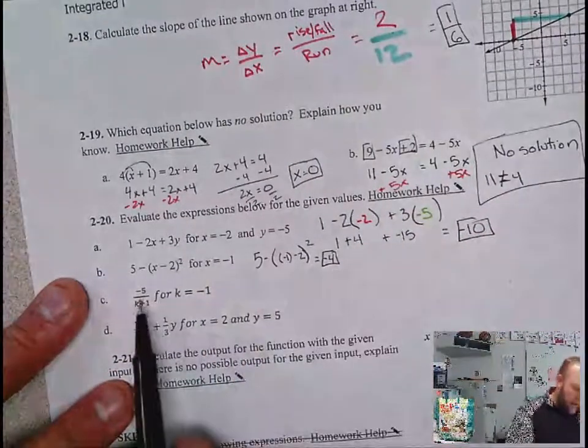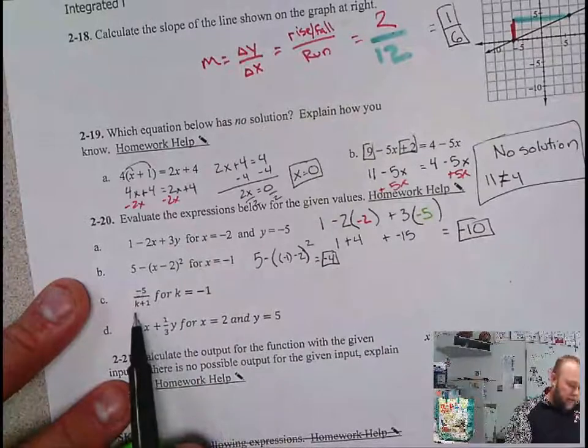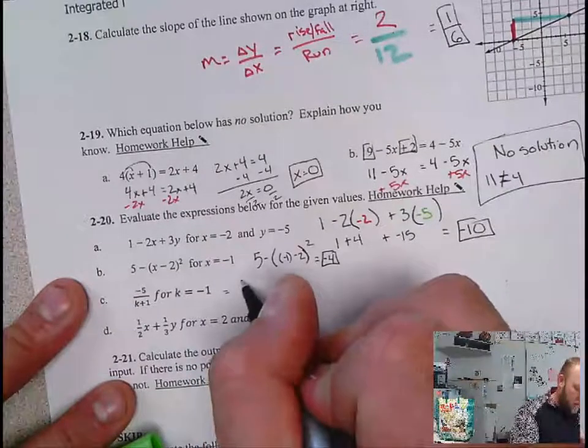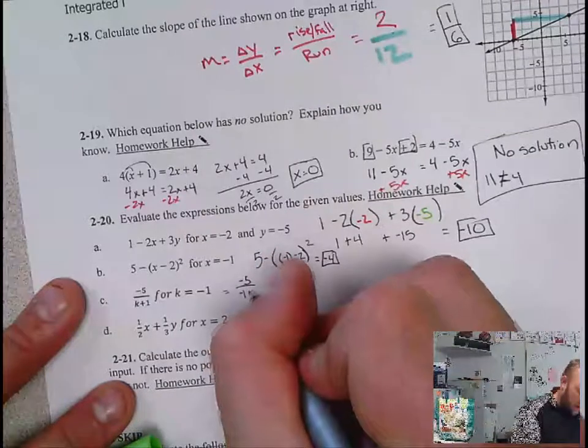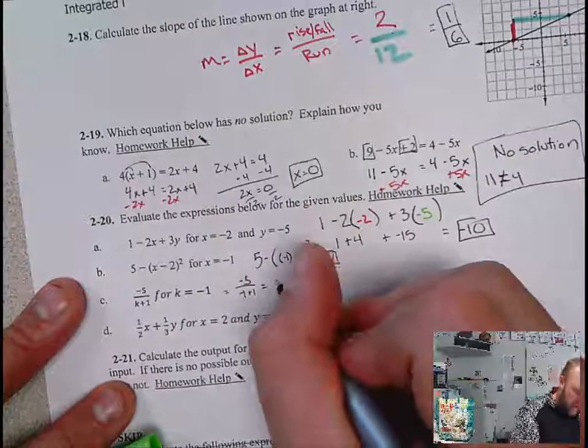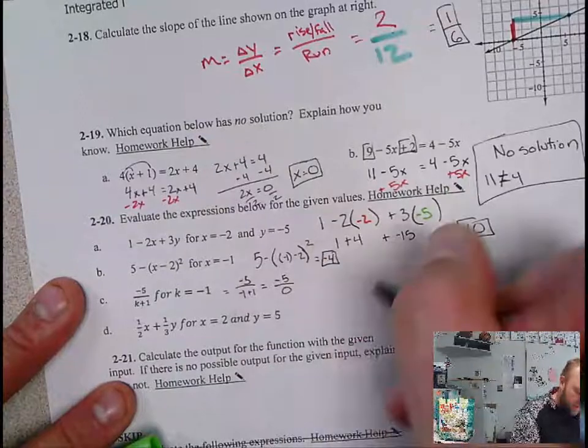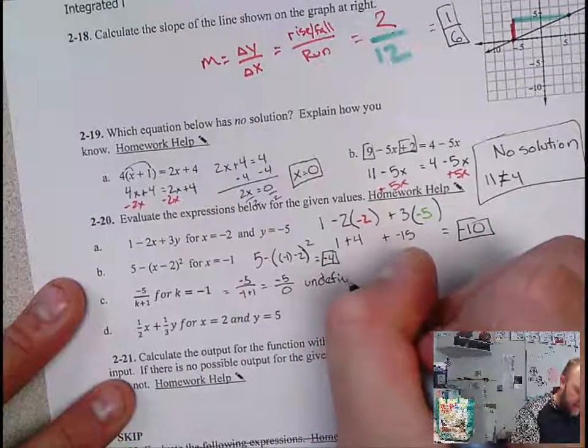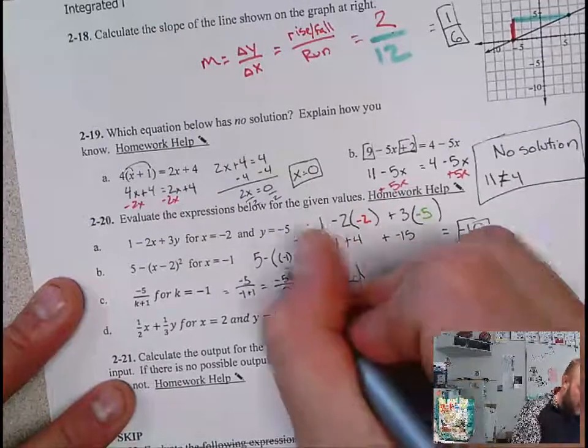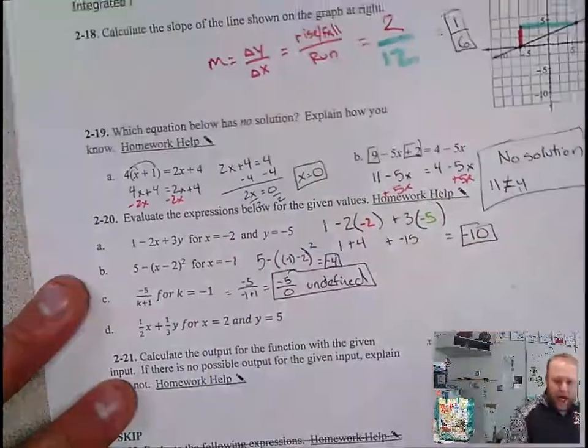Next up, I've got -5 / (-1 + 1), which would be -5 / 0, which is undefined. Remember, we cannot divide by zero. If we do that, we get math error.